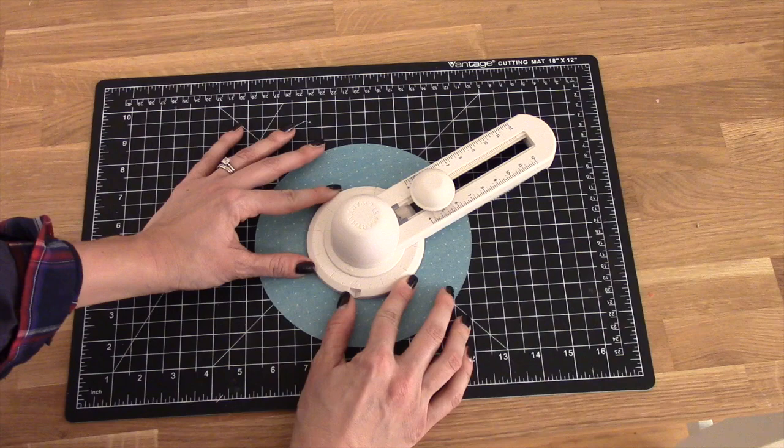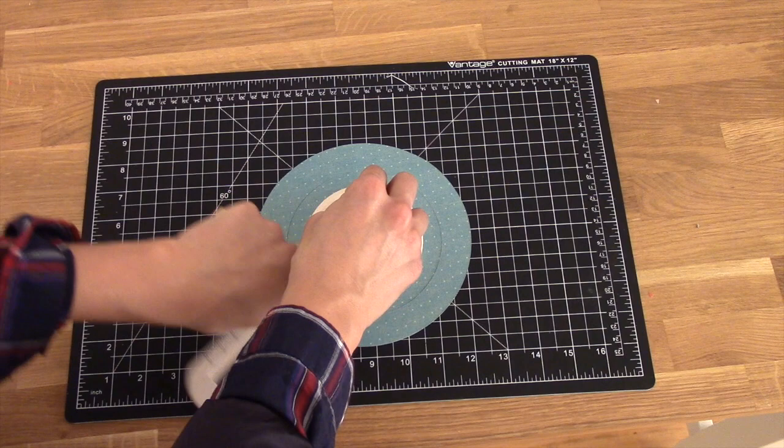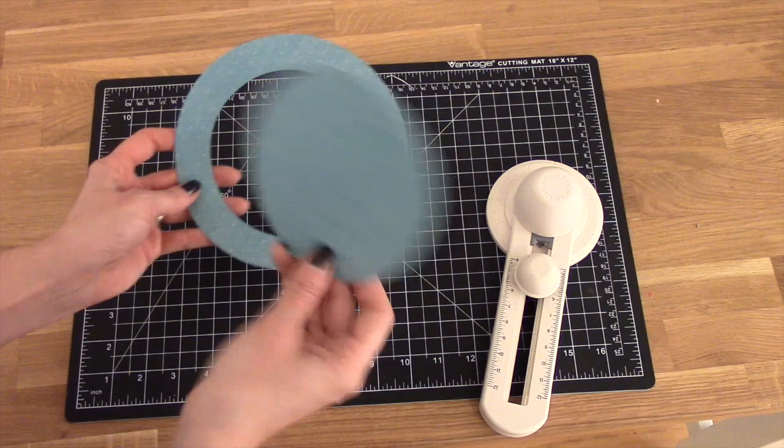So we're going to try and center this, put your hand on your gripper again, and begin cutting. Going around our circle, and there you have it—a circle with the circle cut out of the middle and a smaller circle.